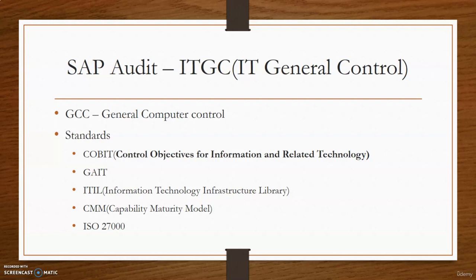The second standard is GAIT, first published in 2007 by the Institute of Internal Auditors (IIA). This is one of the newer frameworks that addresses IT audit. Rather than defining specific IT-related control objectives, it defines a risk-based methodology for prioritizing the importance of those controls. The first version was intended to facilitate scoping of IT controls for SOX testing. The most recent addition, GAITR, broadens this approach to cover the interaction between IT and business risks.